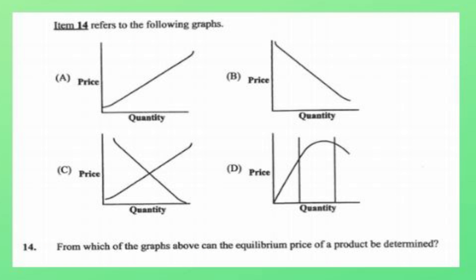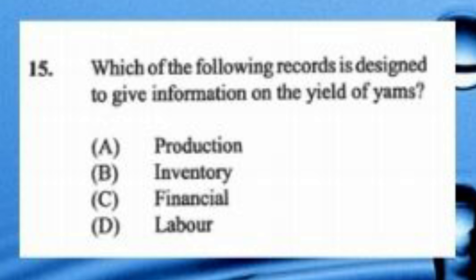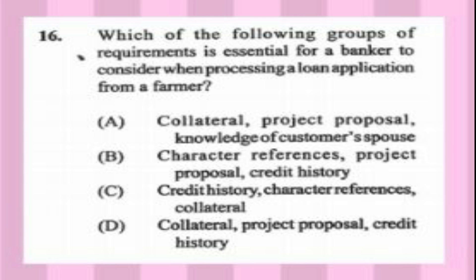Question number fourteen refers to graphs — from which can the equilibrium price of a product be determined? The answer is C, that is the point where the demand and supply curves intersect. Question number fifteen: which of the following records is designed to give information on the yield of yams? A) production, B) inventory, C) financial, D) labor. The answer is A, production.